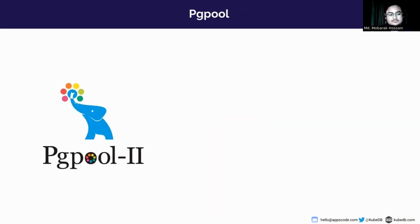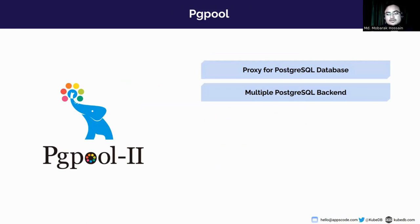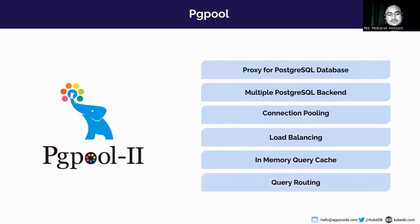So what is PGPool? PGPool is a versatile proxy solution positioned between Postgres servers and database clients. You can configure multiple Postgres servers as a backend for PGPool. PGPool also offers essential functionalities such as connection pooling, load balancing, in-memory query caching, and many more. You can also route specific queries to specific Postgres instances with pre-configured query rules. PGPool effectively enhances the performance, scalability, and reliability of Postgres database systems.